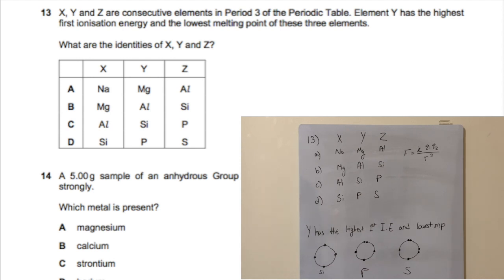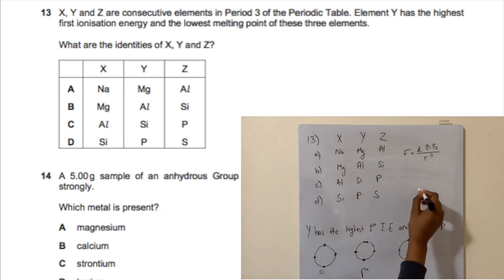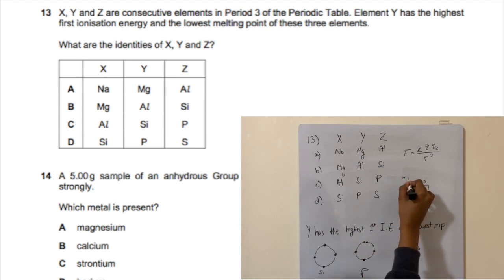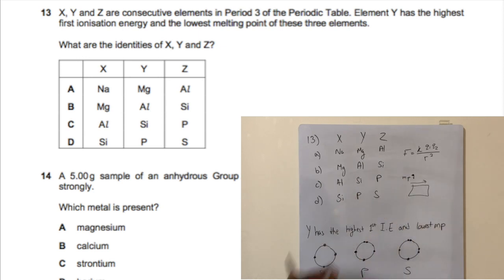For question 13, we need to find elements X, Y, and Z. All four options are consecutive elements, so we can't rule anything out yet. We're told Y — the middle one — has the highest first ionization energy and the lowest melting point. A general rule is that melting point increases as you go across the periodic table because atomic radius decreases.